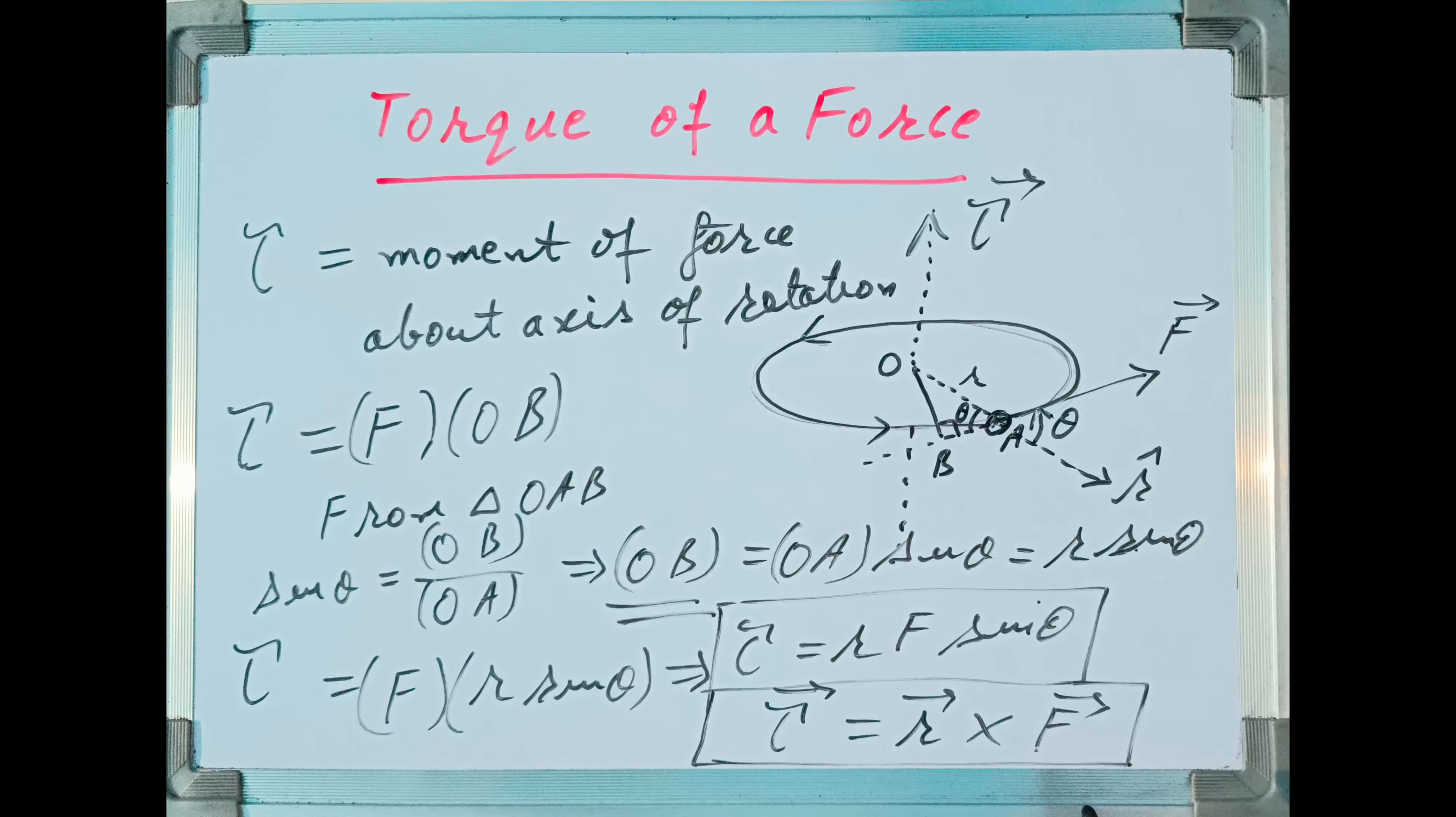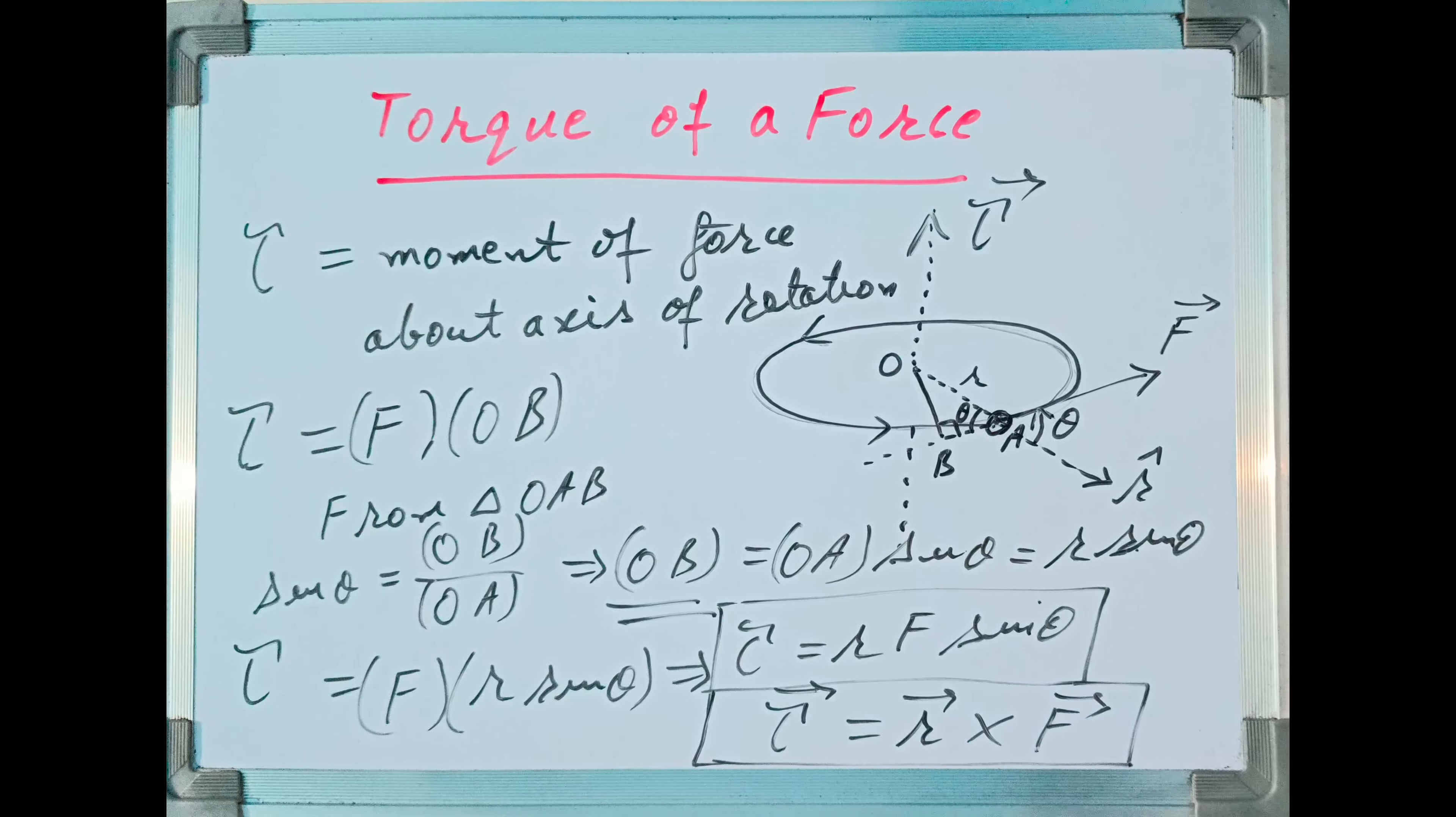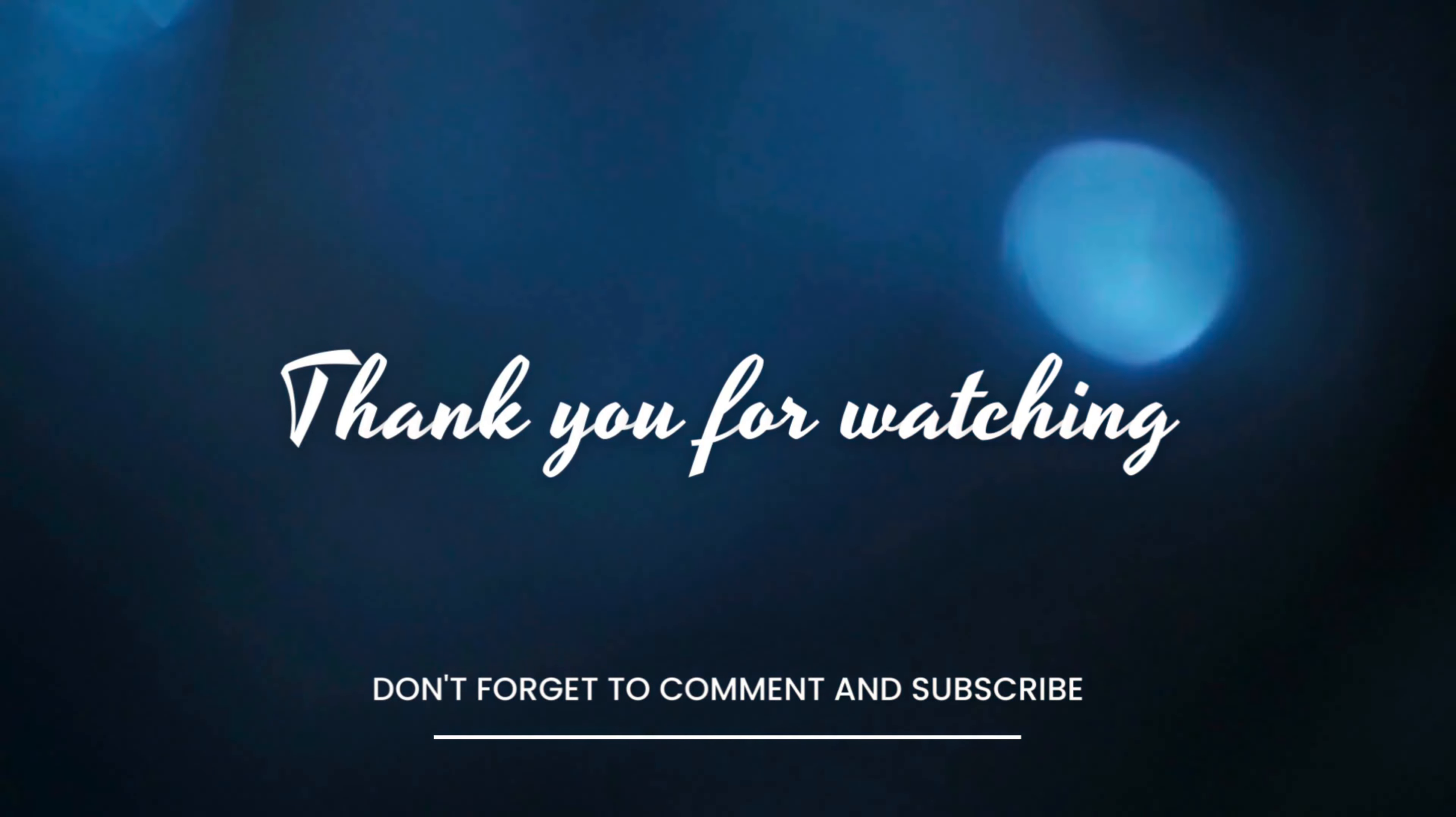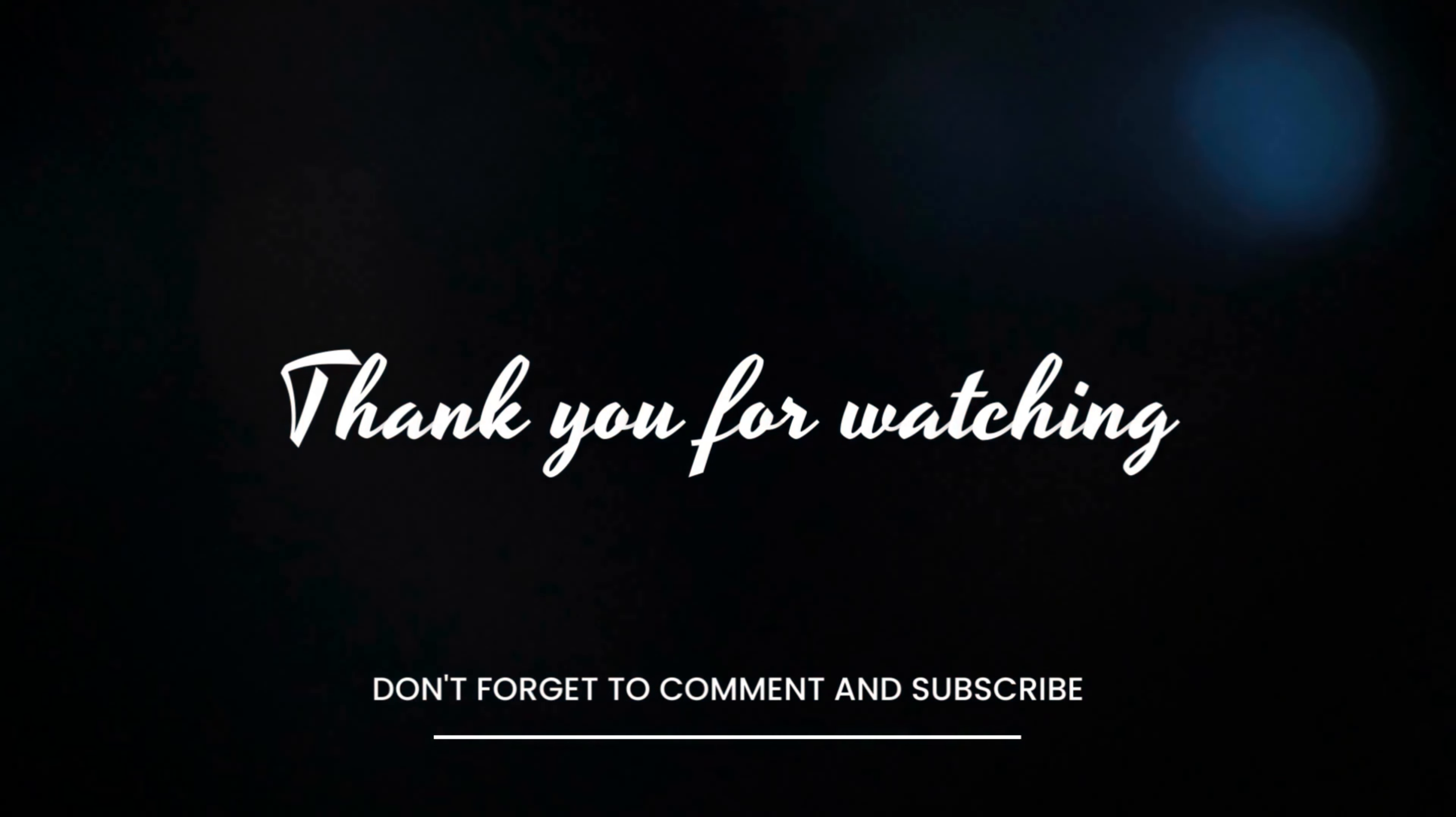So it must have some direction also. How to find its direction? For that purpose, we make use of the right-hand thumb rule for cross product of two vectors. If I curl the fingers of right hand from this radius vector towards force vector, then the thumb will give us direction of tau vector. And it will be along this axis of rotation. This is how the direction of torque due to a force can be found.